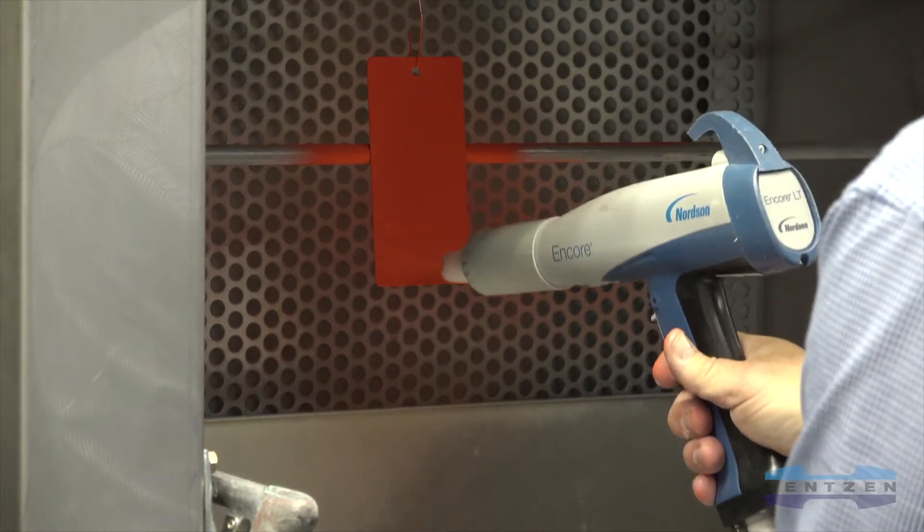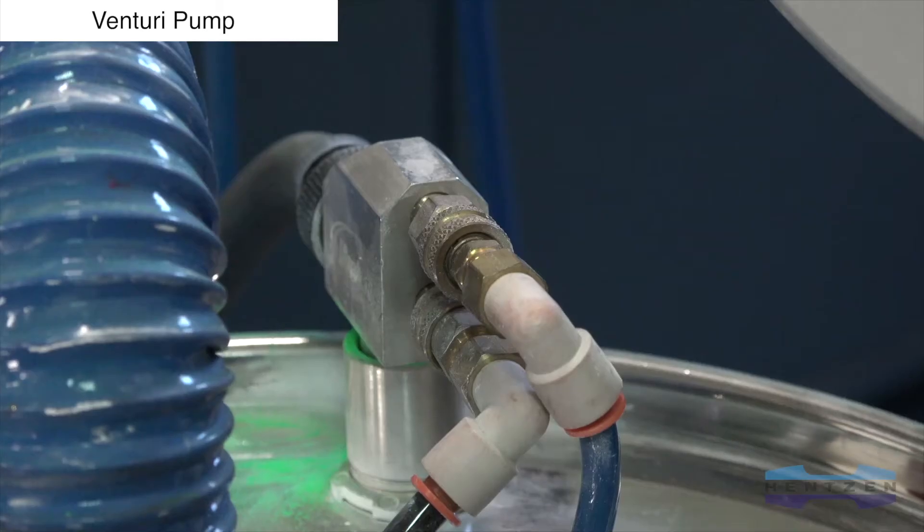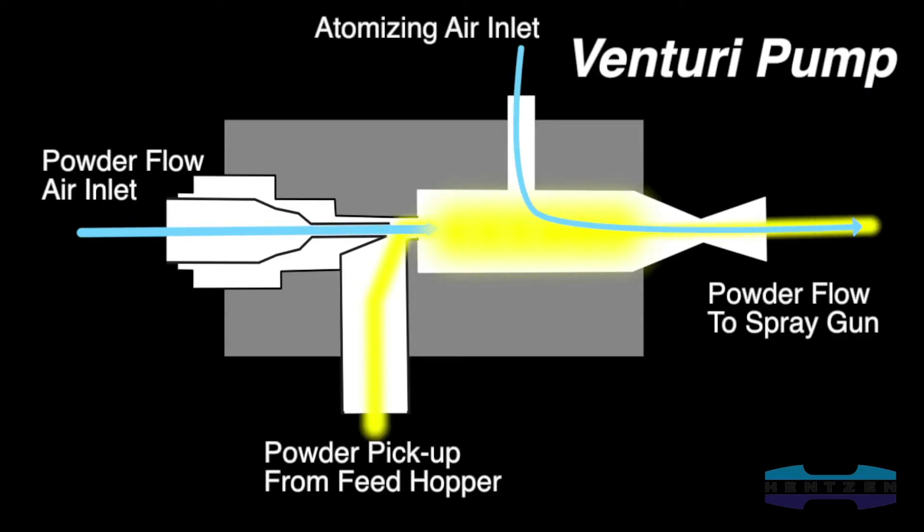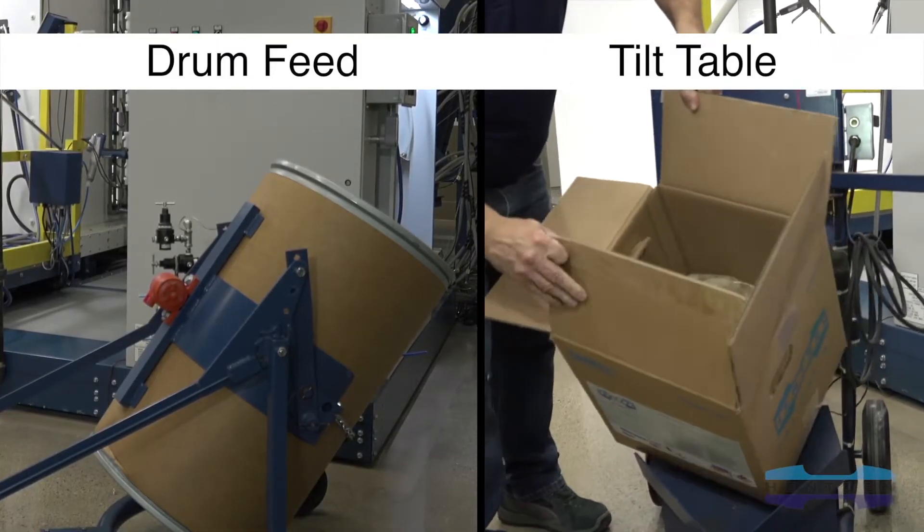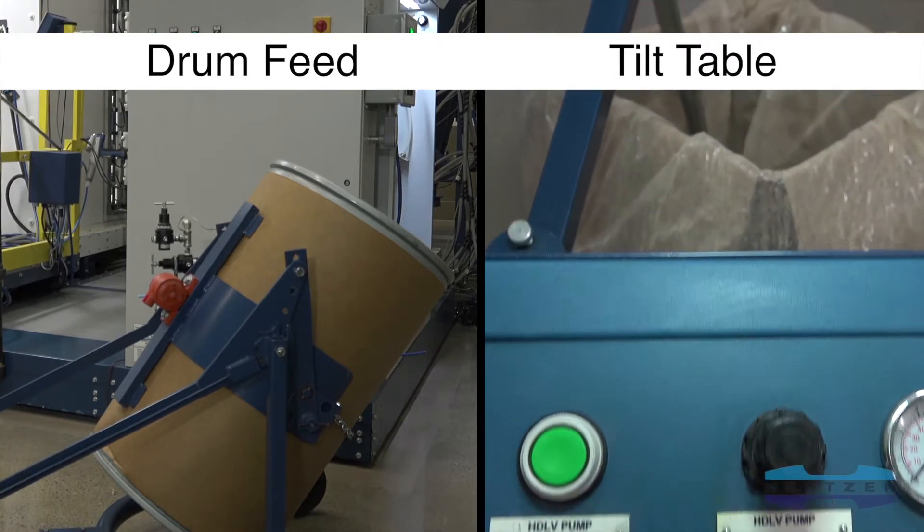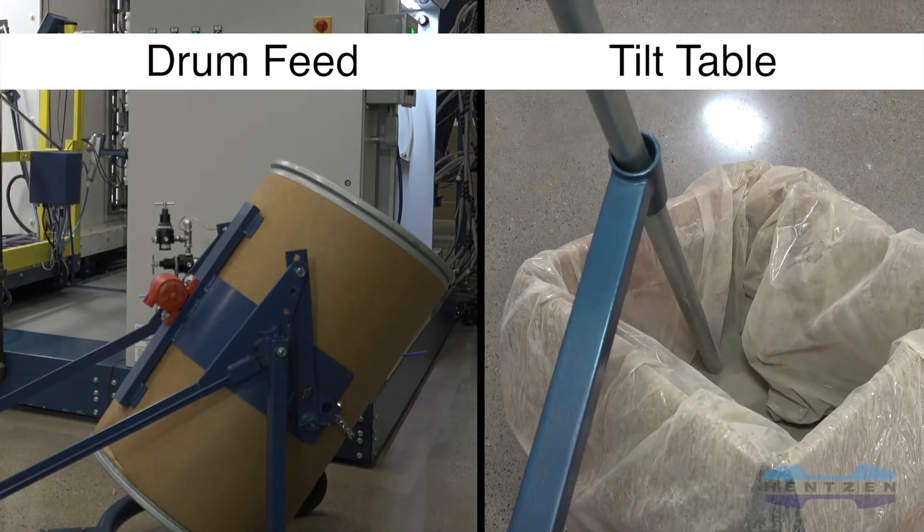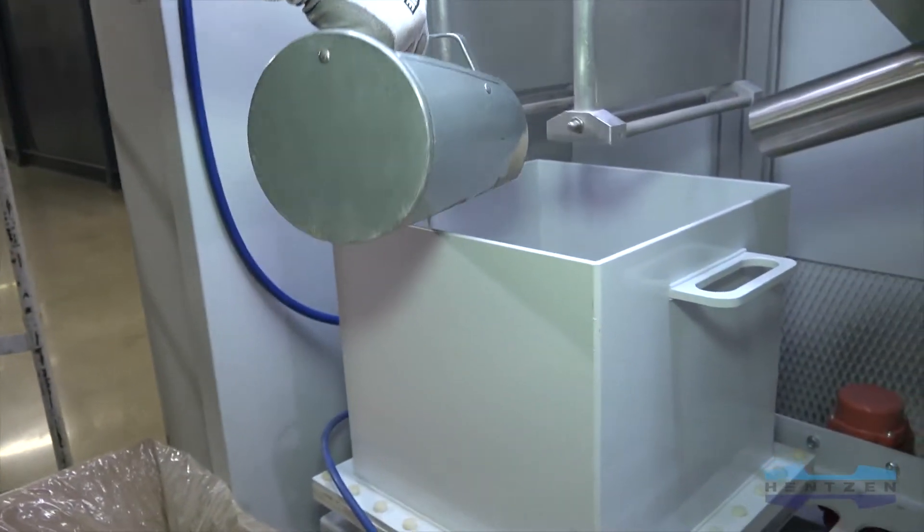Powder delivery is accomplished by adding virgin powder to the paint system utilizing a bulk pumping system. This is accomplished with Venturi pumps or dense phase pumps to transfer the powder coating from the container to the powder coating booth. Some coaters use drum feeding systems and some use vibratory tilt tables. Some coaters will also manually add the virgin powder into the hopper or reclaim unit.